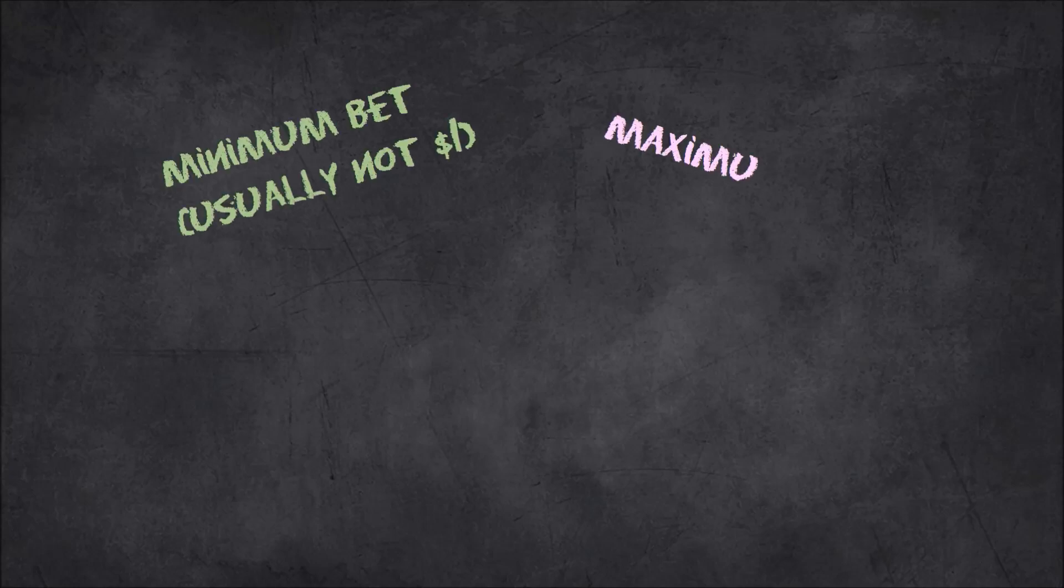Even though it seems like we have a solid system here, we're actually only winning a dollar at a time. There's a lot of flaws with this system. Casinos usually have a minimum bet that's higher than $1, and they usually implement a maximum bet. So if we start at a higher minimum bet, we'll likely reach the maximum bet before the probability of losing gets low enough.